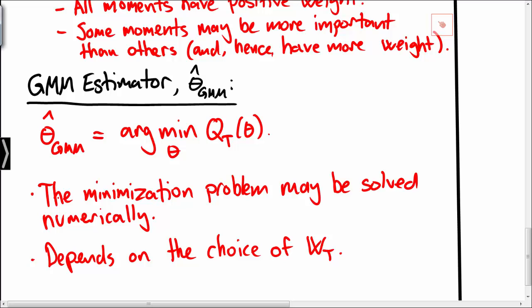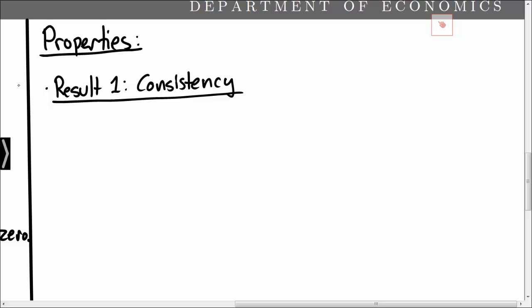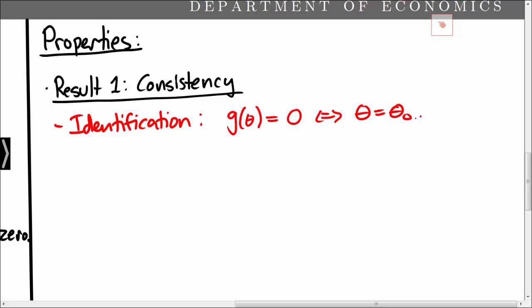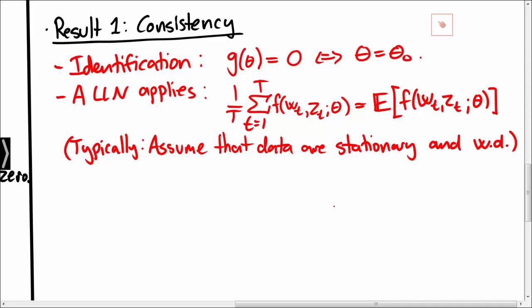Next we turn to the properties of the GMM estimator, starting with high-level conditions sufficient for consistency. First we assume that the true parameter vector theta zero is identified, formally stated as g being equal to zero if and only if theta is equal to theta zero. Moreover, we assume that a law of large numbers applies, meaning the sample average of f tends to the expectation of f as T tends to infinity. We typically assume the data are stationary and weakly dependent so that a law of large numbers applies. Given identification and the law of large numbers, the GMM estimator is consistent for any choice of weight matrix Wt.